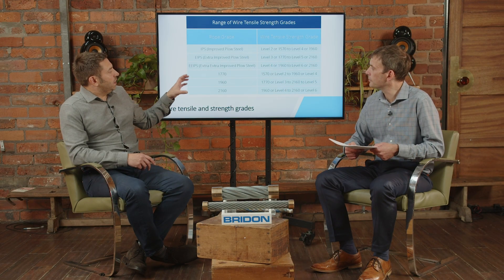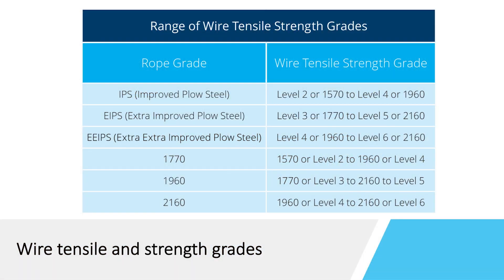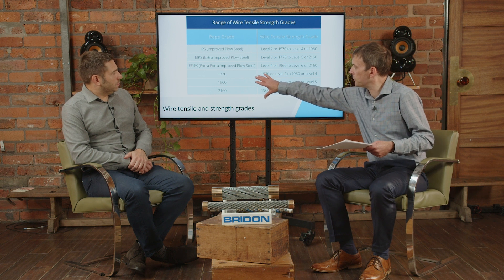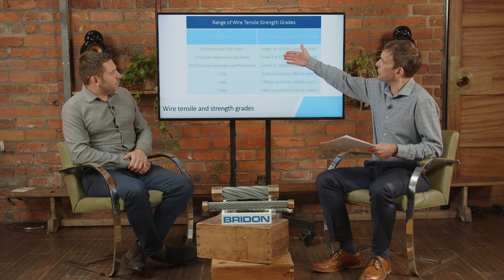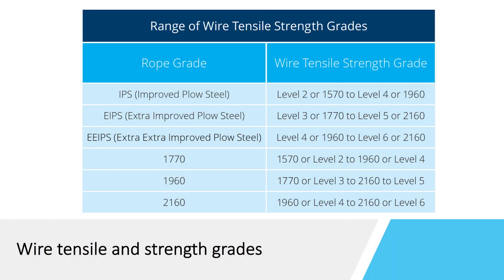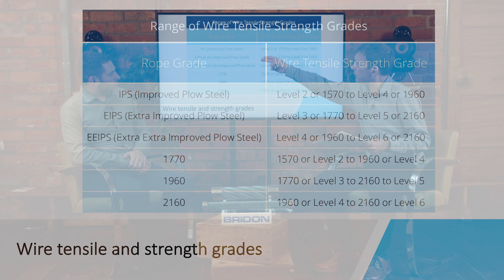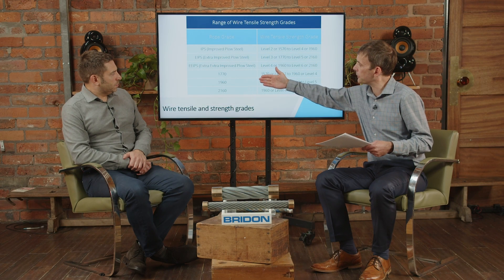We've got details here of IPS, EIPS, EEIPS — these are the American and European versions of essentially the same thing. We have two different versions: the European/international standards which use these numbers, and the North American system which uses the ploughed steel designations. The improved ploughed steel would be the same as 1770, the extra extra improved ploughed steel would be the same as 1960, and the extra extra improved ploughed steel is the 2160.